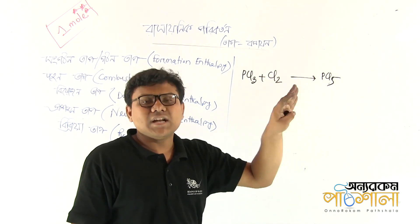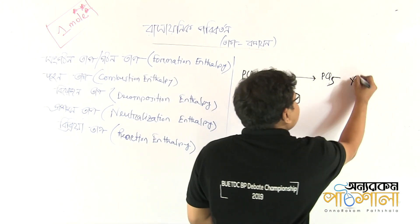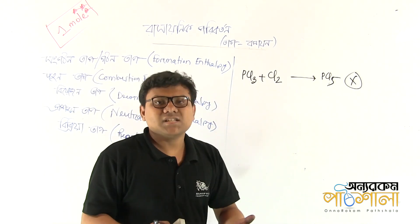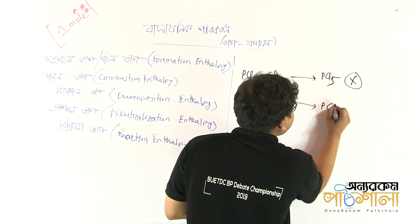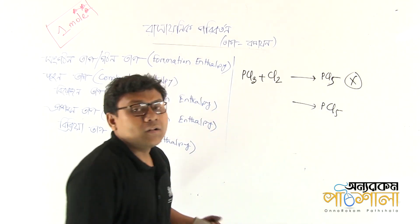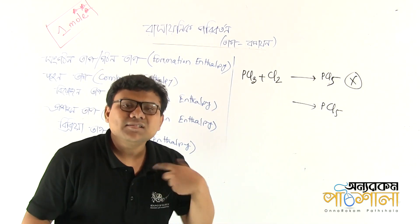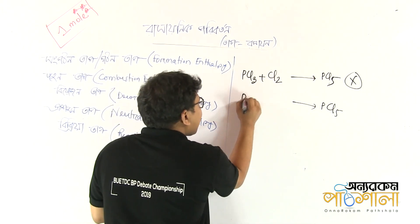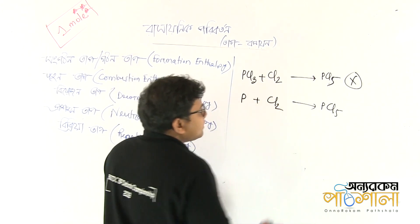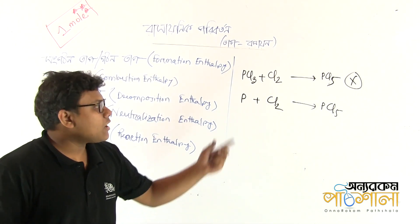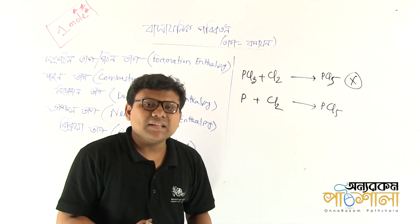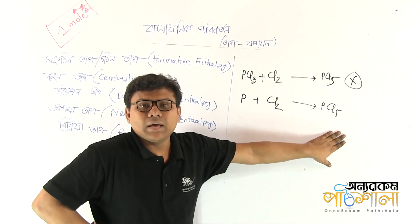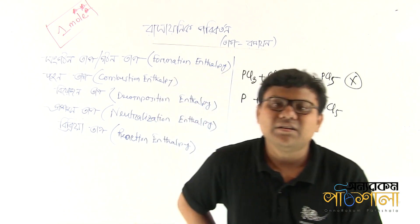It is not a formation reaction for PCl5 as written. For our formation reaction, we depend on the constituent elements of PCl5 — phosphorous and chlorine. You can balance the equation to get the formation of PCl5. This is a formative reaction.